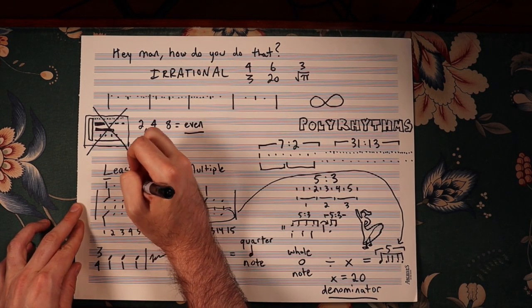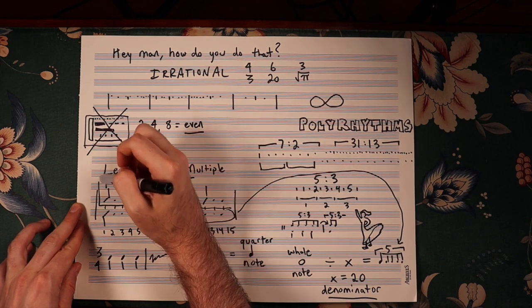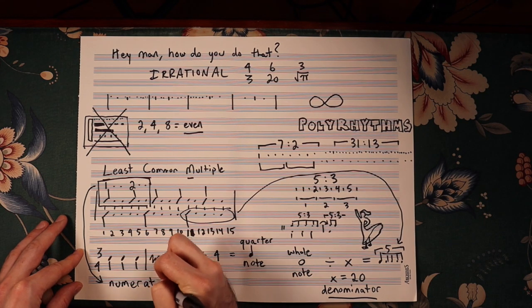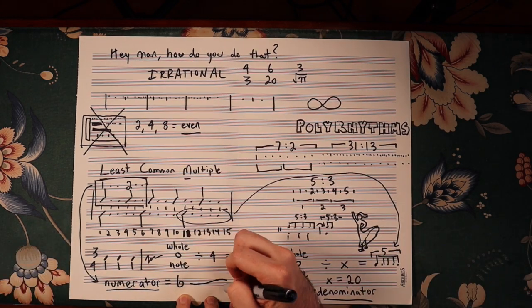To figure out our time signature's numerator, we would multiply those 2 hits by 3, because each of our 5 hits is subdivided by 3. So, our time signature would be 6/20.